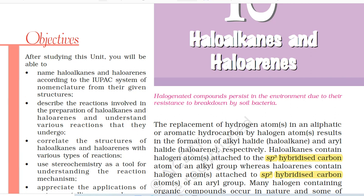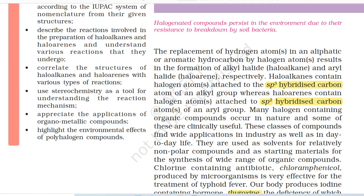Halogenated compounds persist in the environment due to their resistance to breakdown by soil bacteria. The replacement of hydrogen atoms in an aliphatic or aromatic hydrocarbon by halogen atoms results in the formation of alkyl halide, also called haloalkane, and aryl halide, also called haloarene, respectively.